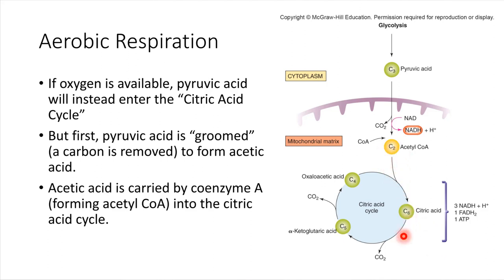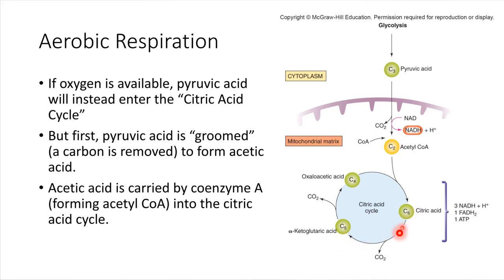In the process of going through the citric acid cycle, this molecule that enters in joins up with something called oxaloacetic acid. Once those are joined together, we're back to a molecule that has six carbons, but as we go through the pathway, a carbon gets stripped off here and there. So we go from having six carbons, a carbon falls off, then we're down to five carbons, another one falls off, and then we're back down to four. This is a cycle that can just continue over and over again as we have new acetyl-CoA molecules coming in.